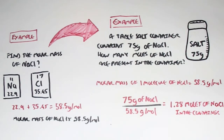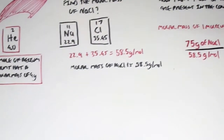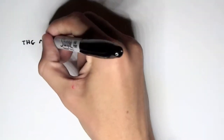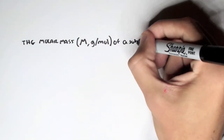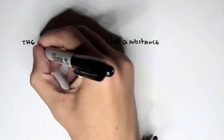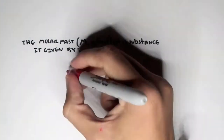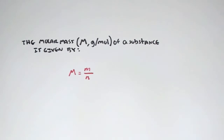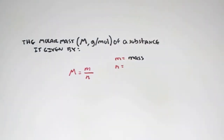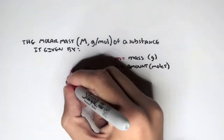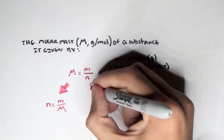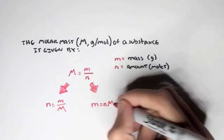There is a proper equation for this. The molar mass, designated capital M and calculated in grams per mole, is equal to mass over amount: M = m/n, where m is the mass in grams and n is the amount in moles. We can rearrange this equation to find the amount in moles or the mass.